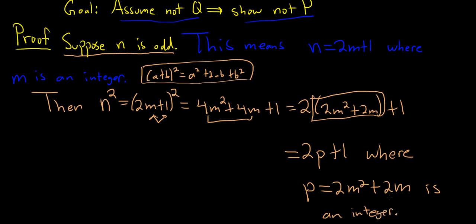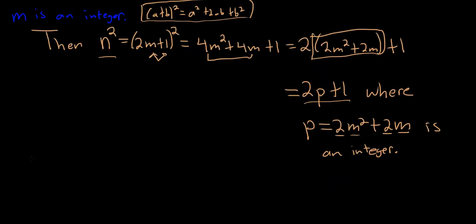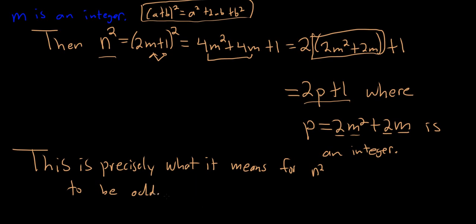If you're wondering why p is an integer, the product of integers is an integer. The sum of integers is an integer. So we've shown that n squared is equal to 2p plus 1, where p is an integer. This is precisely what it means for n squared to be odd. That is the definition of odd. And that completes the proof.